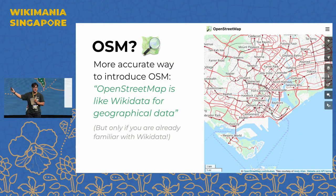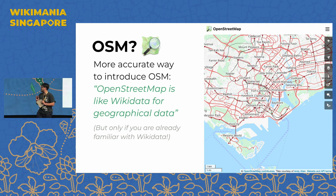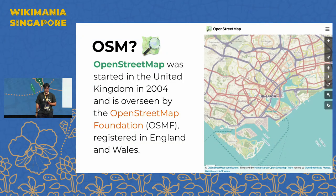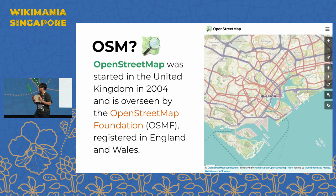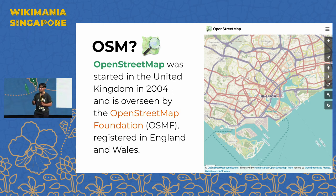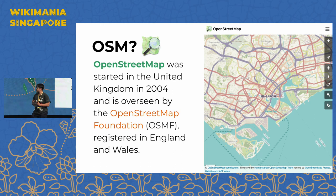This is another map tile more focused on public transportation. The red lines on the map are bus routes in the Singapore central area, and the black lines represent subway or train lines. OpenStreetMap was established in 2004 in the United Kingdom, where a group of people rode bicycles recording bike routes and highways around Cambridge and London. It is overseen by the OpenStreetMap Foundation, registered in England and Wales — just as the Wikimedia Foundation oversees various Wikimedia projects.